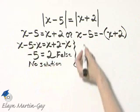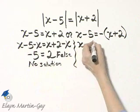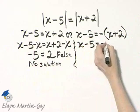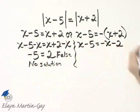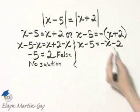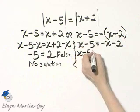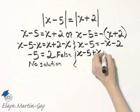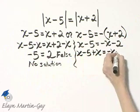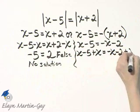What happens on the other side? I'll have x minus 5 is equal to negative x minus 2, taking off parentheses and distributing. Now, I will add x to both sides. So here's the left side, I'll add x. And here's the right side, and I'll add x.